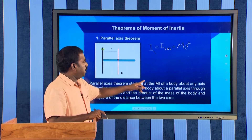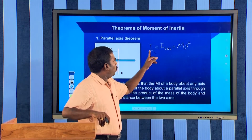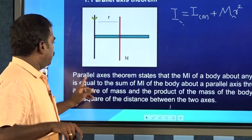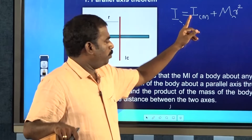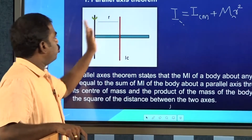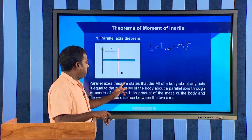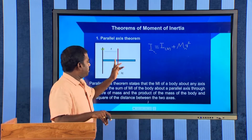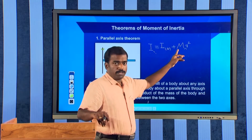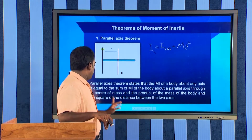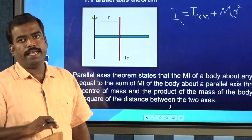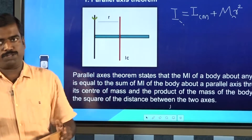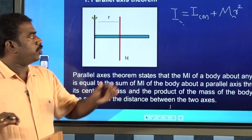The parallel axis theorem states that the moment of inertia of a body about any axis is equal to the sum of the moment of inertia of the body about a parallel axis through its centre of mass — these two axes must be parallel — and the product of the total mass and the square of the distance between the two axes. So I = ICM + MR², where ICM is the moment of inertia about the centre of mass, M is the total mass, and R is the distance between the two parallel axes.